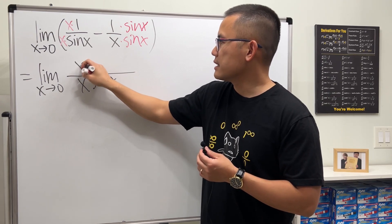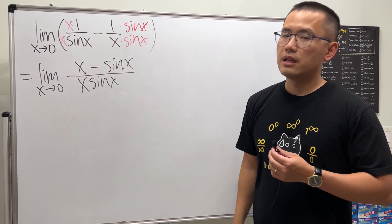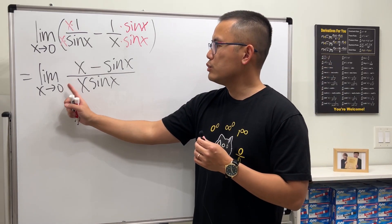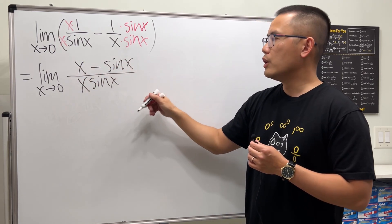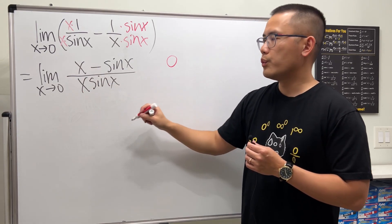And then the top is x minus sin(x). Okay, now we have just one fraction. If you put zero into all the x's we have zero minus sin(0) which is just zero, and if you put zero in here we also get zero.